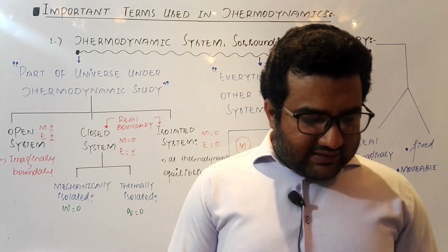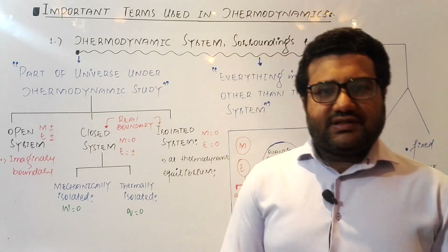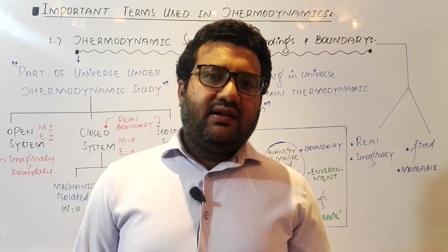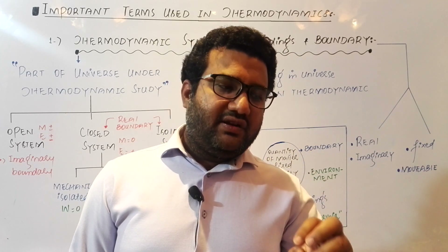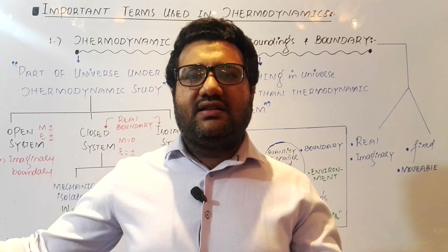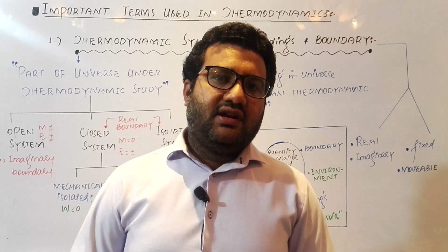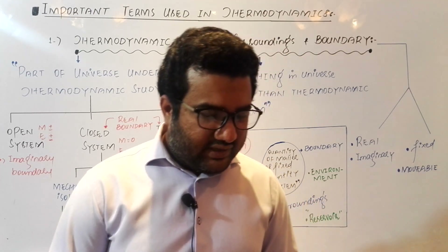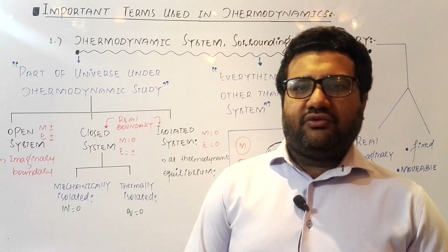So those are the three very basic terms: system, surroundings, and boundary. When you are studying something, it is your system; everything else is your surroundings; and the separation between the system and the surroundings is called the boundary.